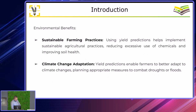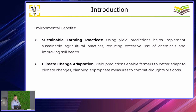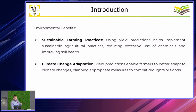Of course, there are also environmental benefits — sustainable farming practices and climate change adaptation. Using yield predictions helps implement sustainable agricultural practices, reducing excessive use of chemicals and improving soil health. If you know you will reach maximum yield potential, you don't need to over-apply fertilizers or degrade the field. You can also better combat droughts and floods.